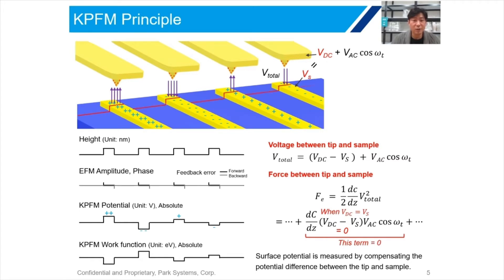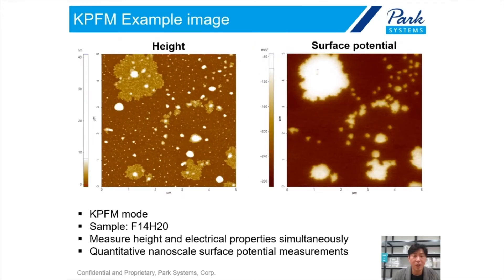KPFM shows the surface potential — negative or positive — with height information simultaneously. Let me show you one good example of KPFM. The sample is F14H20 on a silicon substrate. The images show clear contrast depending on their electrical properties. Some electrical signals follow the height structure, but some structures, like circular structures, indicate a totally different aspect — not following the height image, but purely the sample's surface potential.